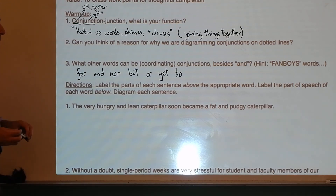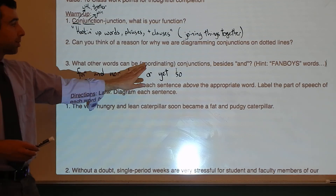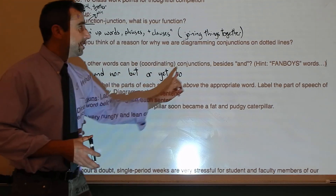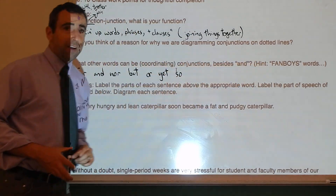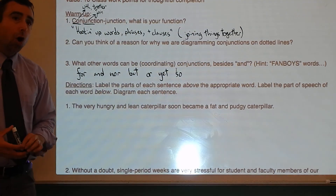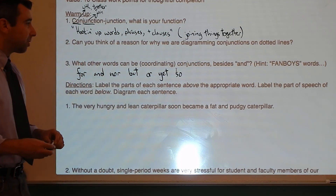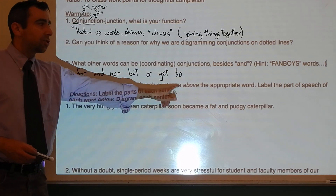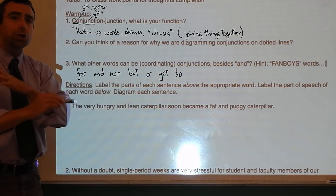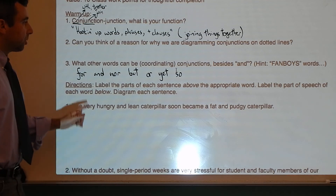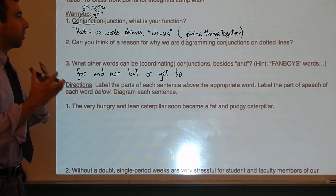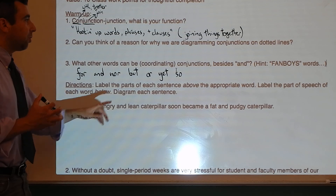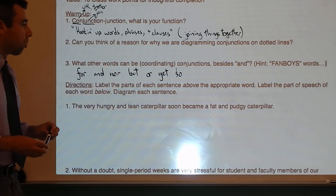What other words can be coordinating conjunctions besides 'and'? Think about FANBOYS words: For, And, Nor, But, Or, Yet, So. They all join things together. The relationships they indicate are different, but they're all joining things of equal value — that's what it means to say they're coordinated.